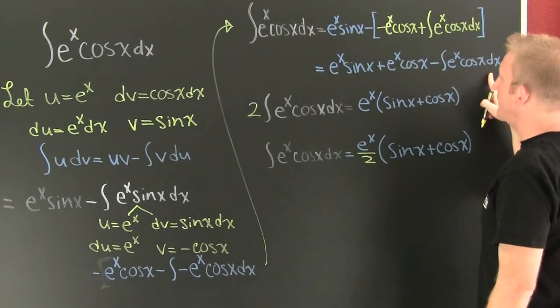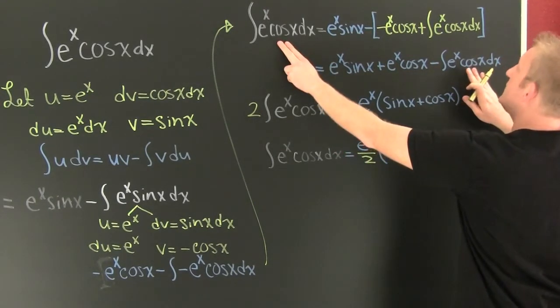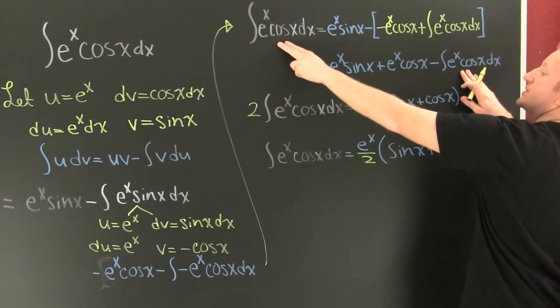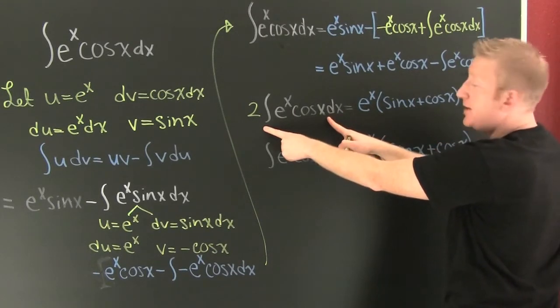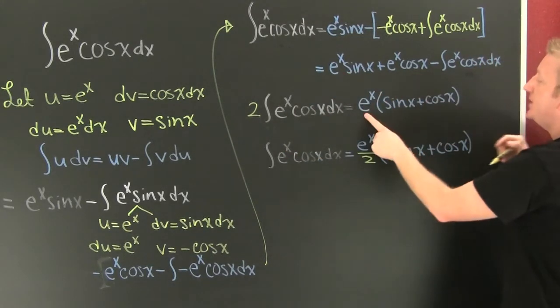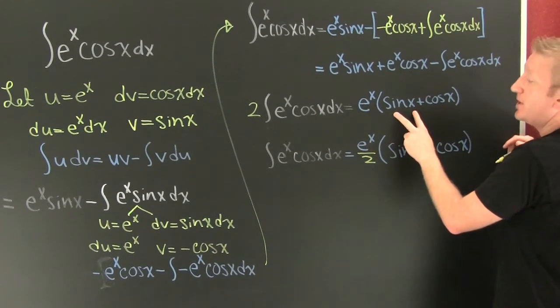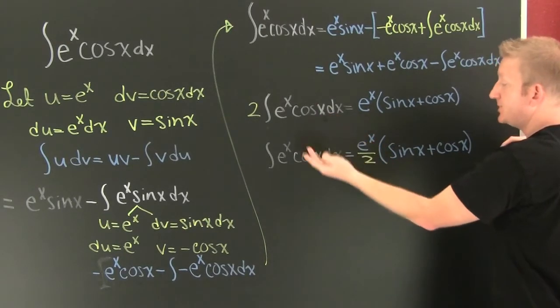And then, what do I see here? I see that I have these on both sides. So I'm going to add the integral of e to the x cosine x dx to both sides, getting me two of them over here. I factored out an e to the x. So now I have e to the x times this. And what am I trying to do? I'm trying to find that integral. So I divide both sides by two. And then here we go.